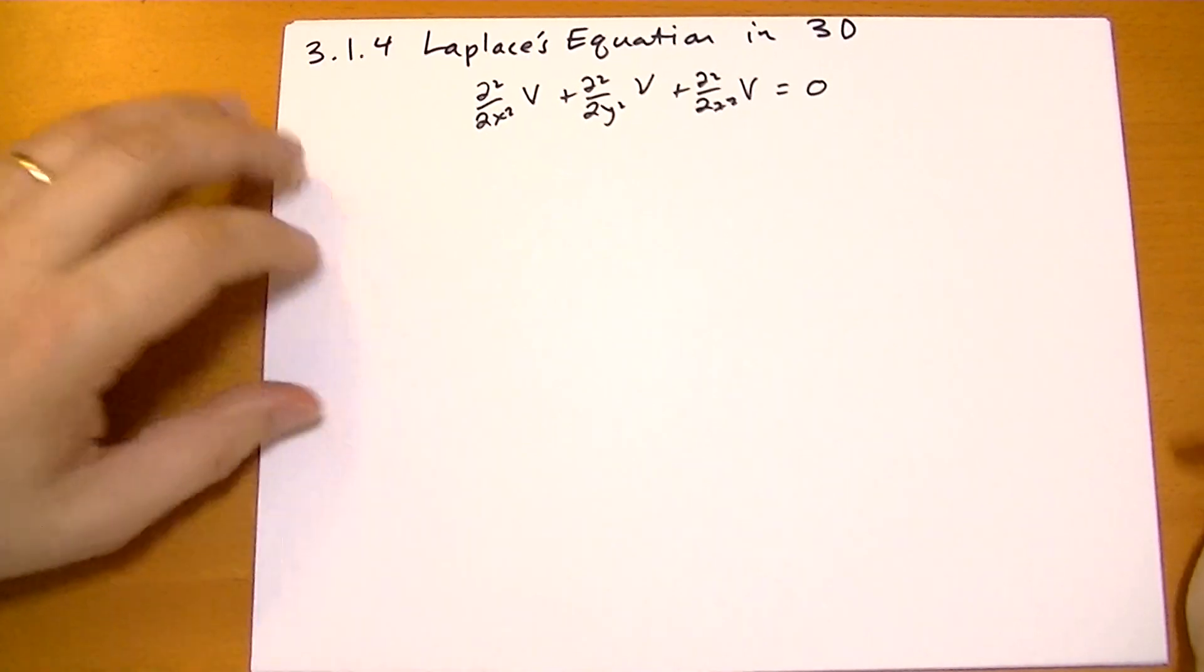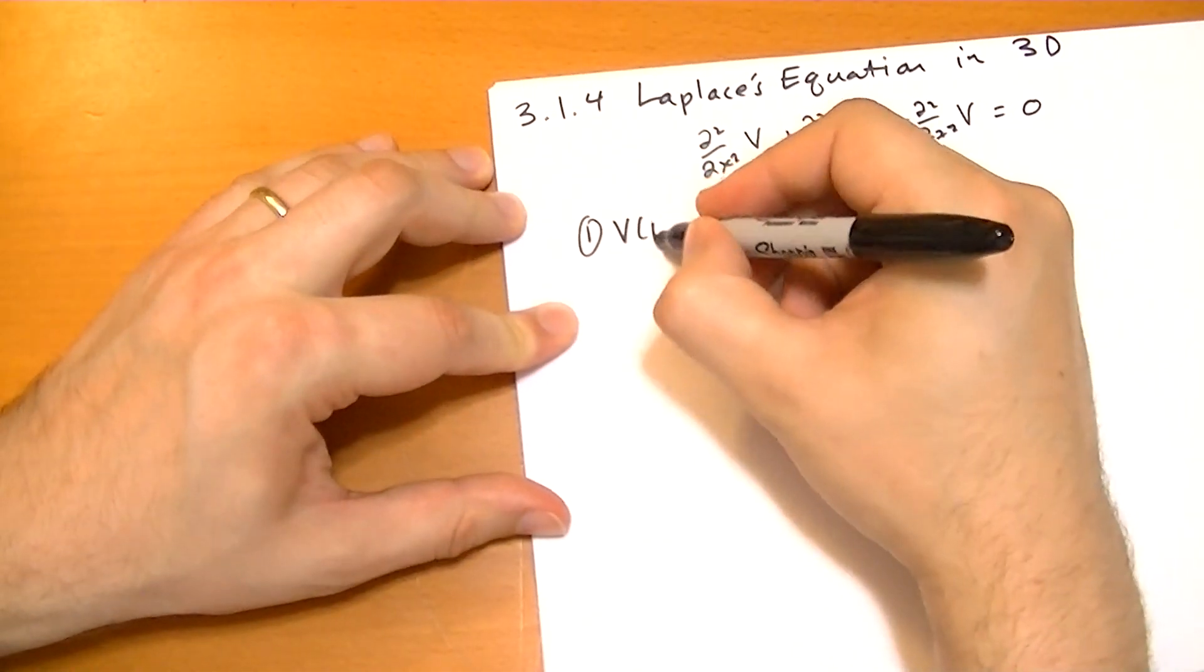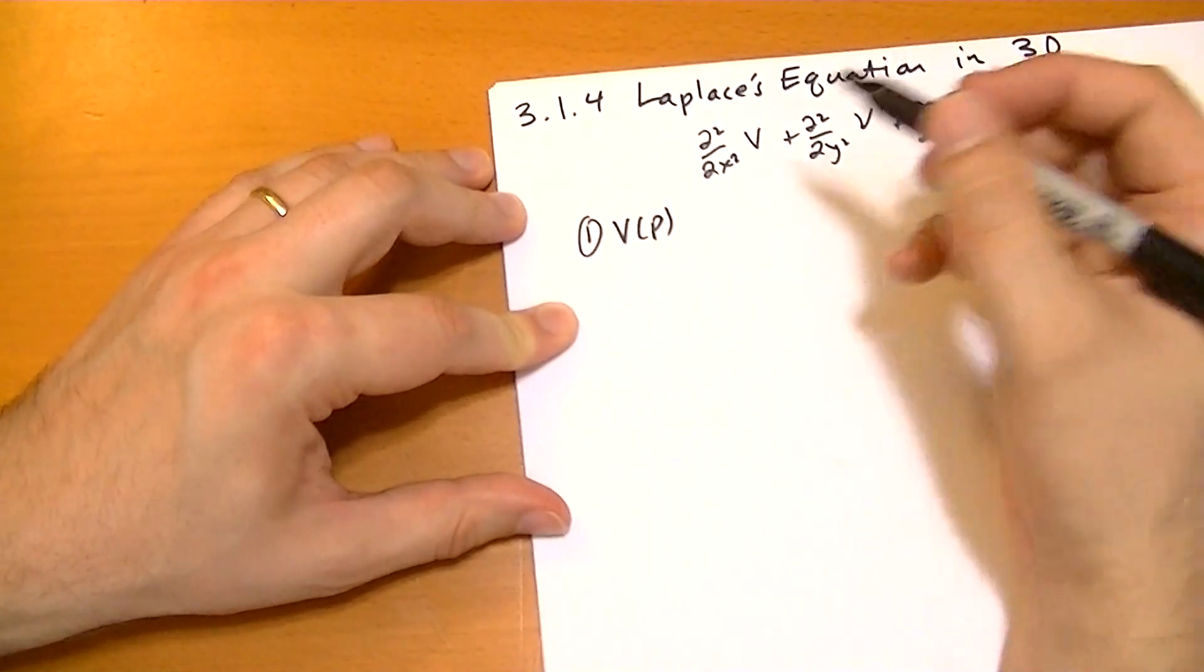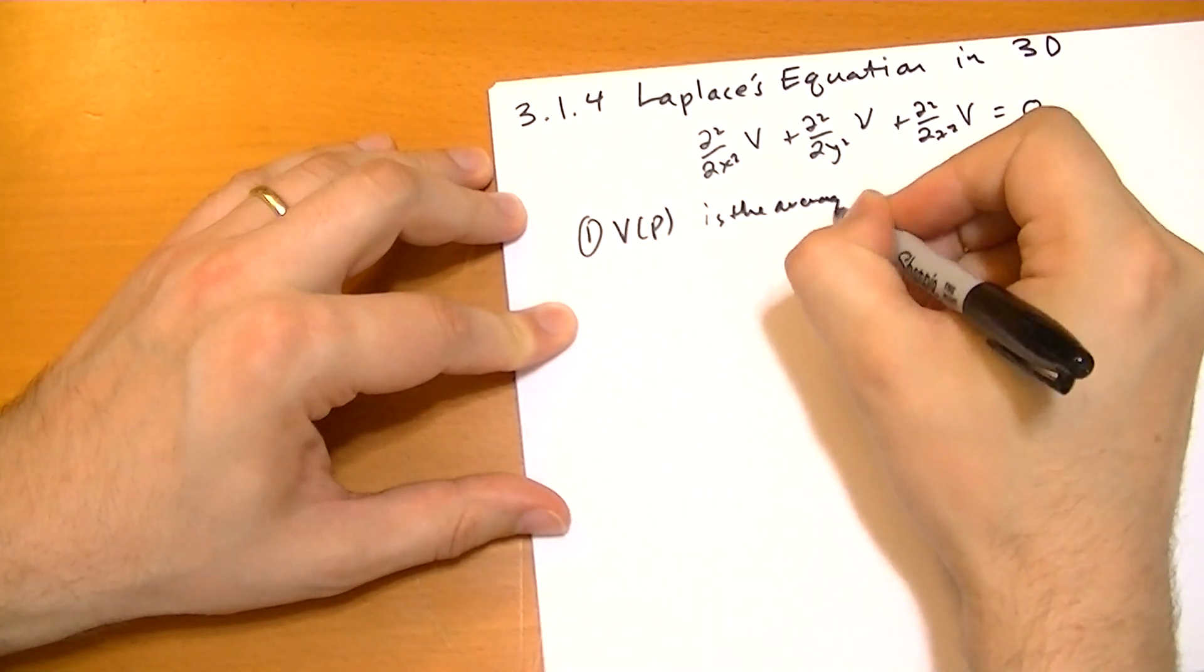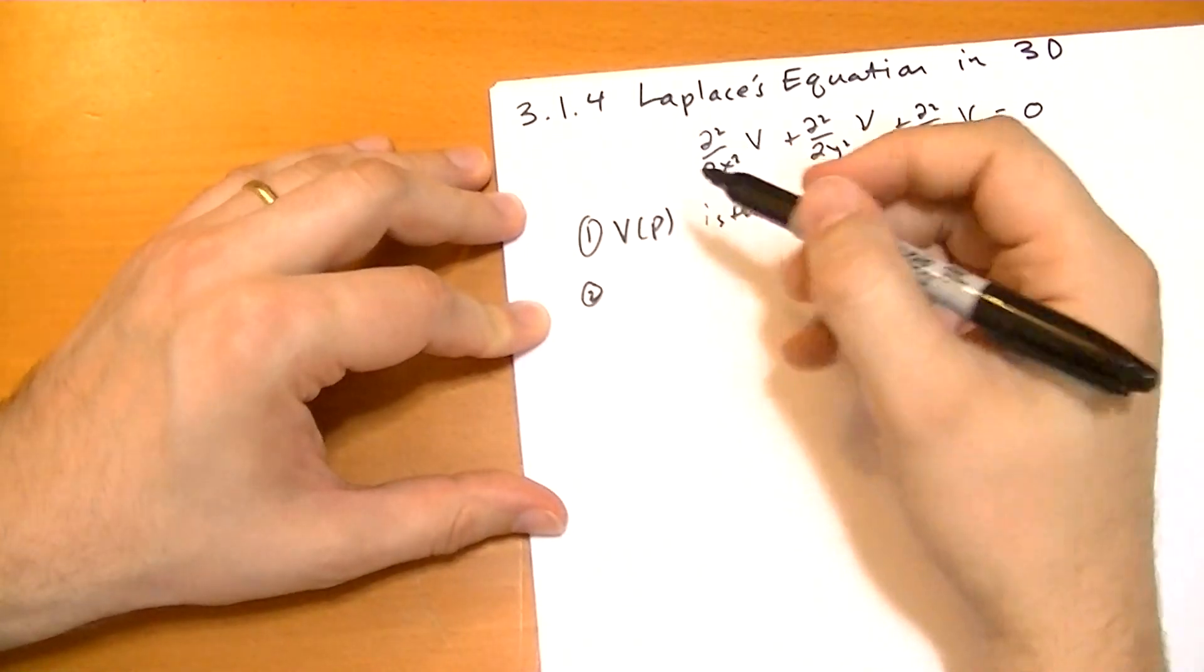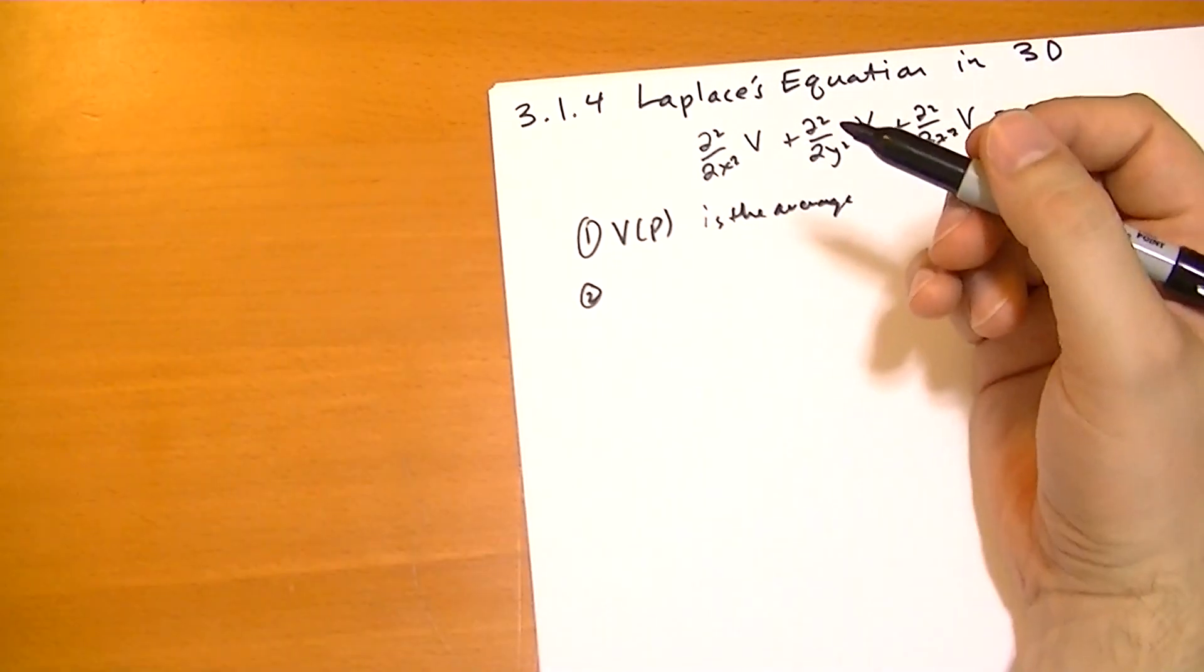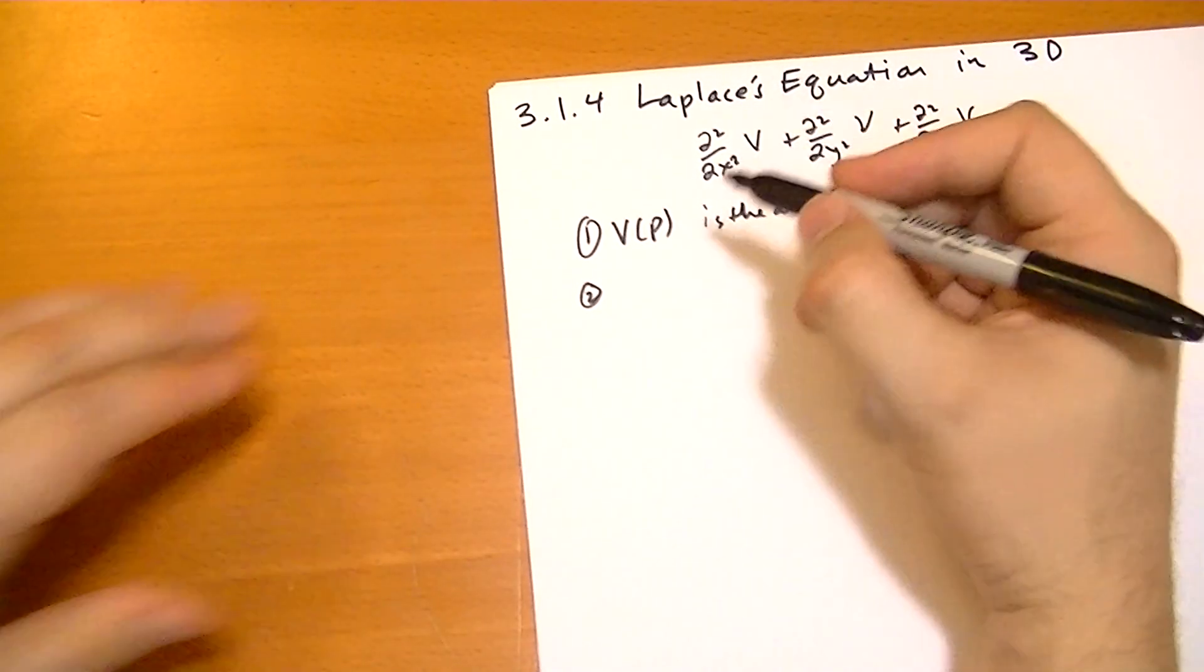But the two facts are consistent. One, the potential at a point is the average of the neighbors. Two, that there is no local max or min.